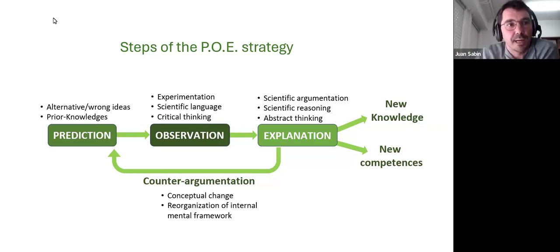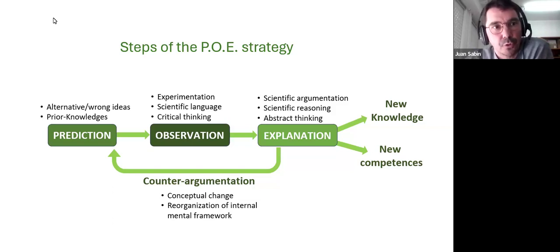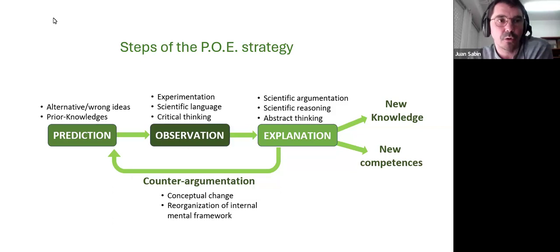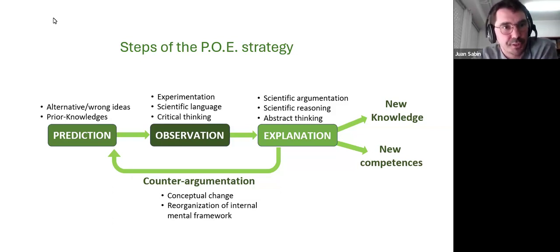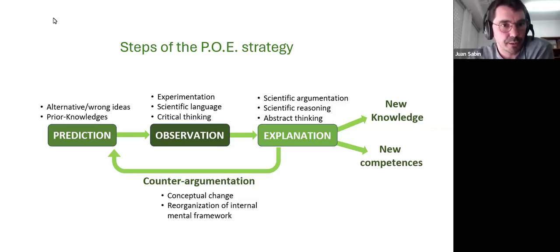The last step is the explanation of what they observed, which enhances scientific argumentation, scientific reasoning, and abstract thinking. Crucially, the explanation should not only explain what they observed — students must also work on counter-argumentation of their wrong predictions. They should explain why some predictions were wrong. This helps create the conceptual change that the constructivist approach seeks, reorganizing internal mental frameworks, and ultimately producing new knowledge and more significant learning.